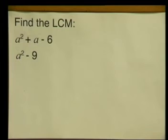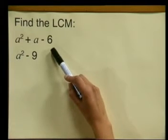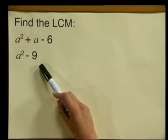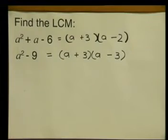Find the lowest common multiple of a squared plus a minus 6, and a squared minus 9. Do you recognize these expressions? The first one is a quadratic trinomial. The second one is the difference of two squares. We need to find the lowest common multiple of these expressions. Now we know how to factorize from previous lessons, so I've gone ahead and factorized them for you. Here they are in their factorized form.